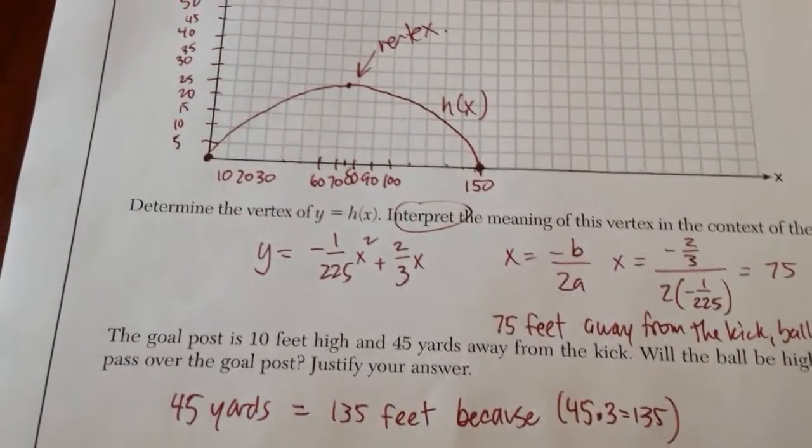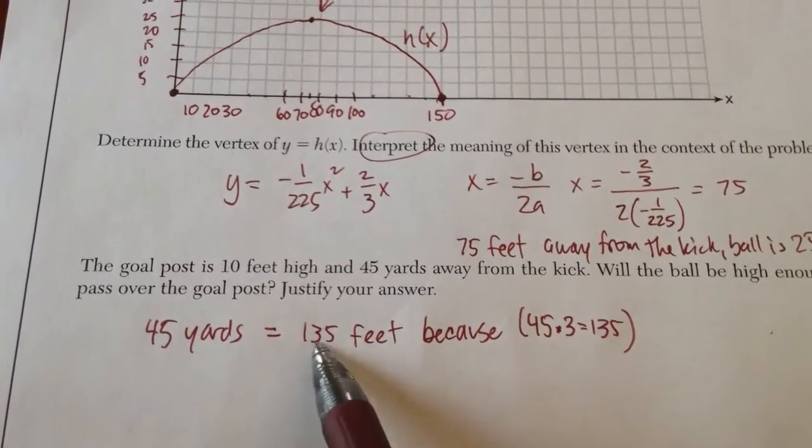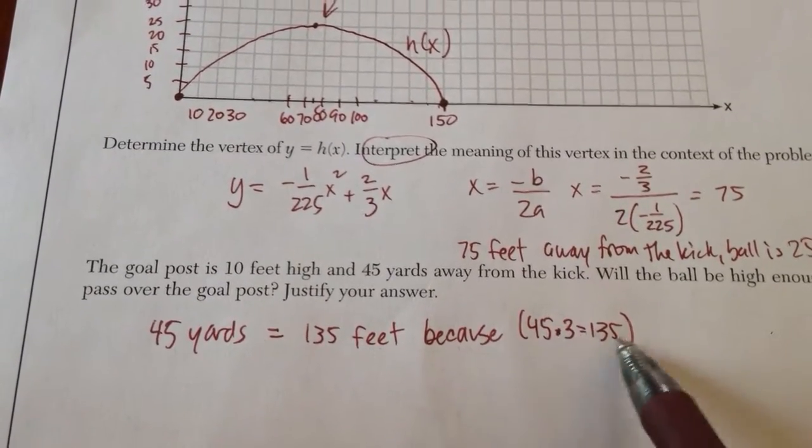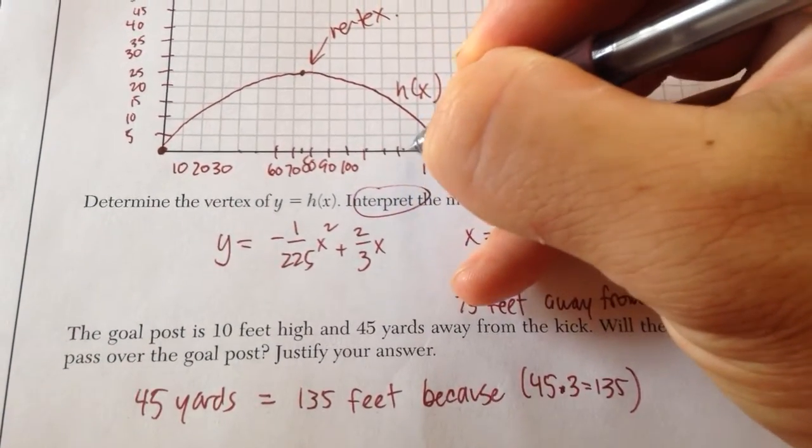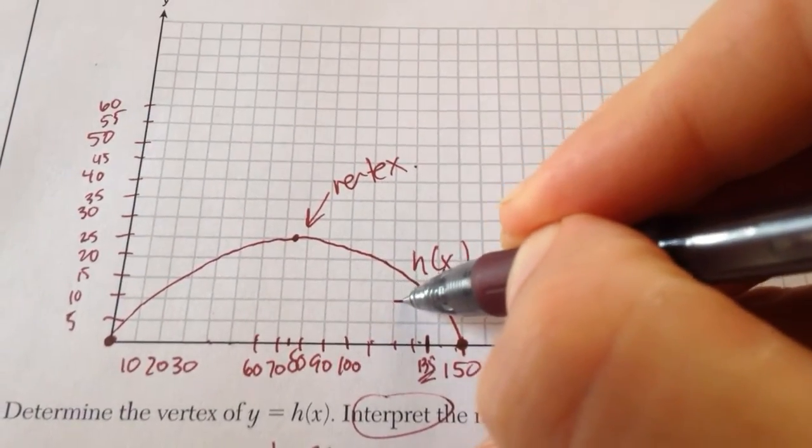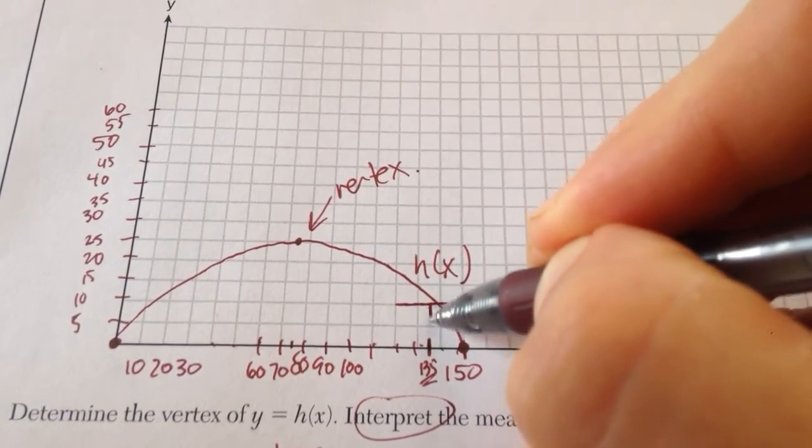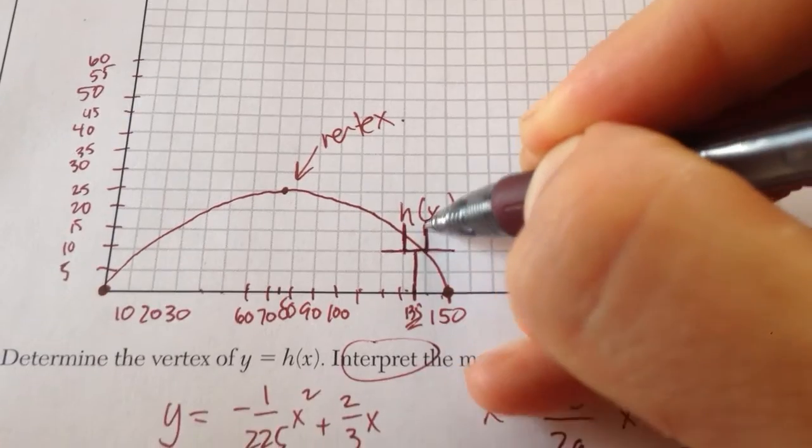For the last part, it says the goal post is 10 feet high and 45 yards away from the kick. Now, 45 yards is equal to 135 feet because 45 times 3 is 135. So at 135, the goal post is 10 feet high. So if you can imagine, this looks like the field goal post.